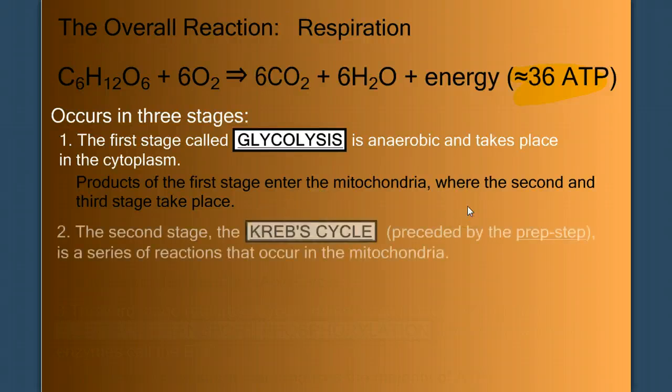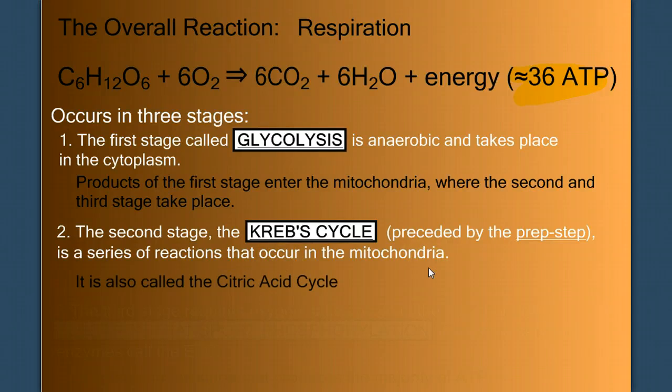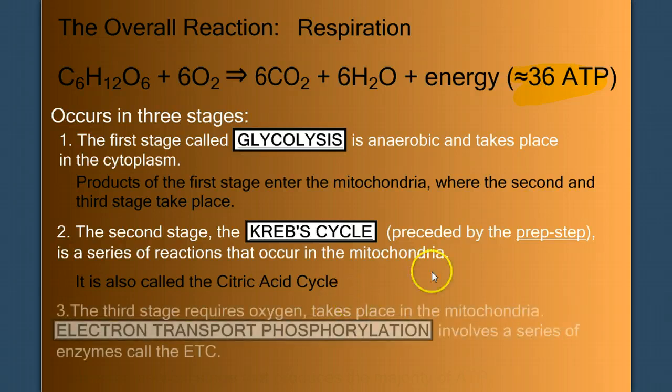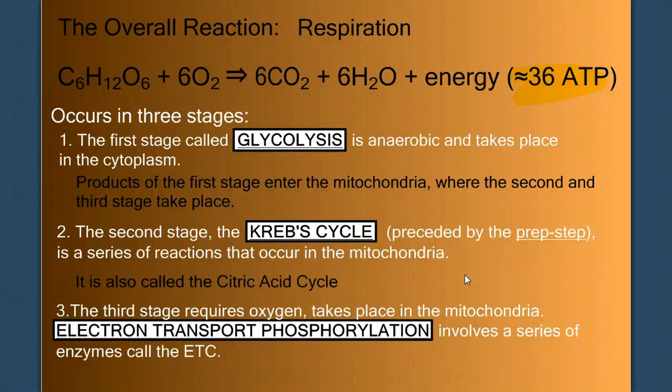The second stage of respiration is called the Krebs cycle. It's preceded by a preparatory step, and it's a series of reactions that occur in the mitochondria that are often referred to as the citric acid cycle, because the first intermediate made is citrate or citric acid. And the final stage of respiration is electron transport phosphorylation.